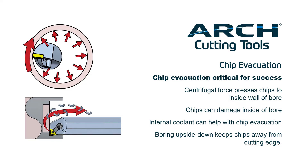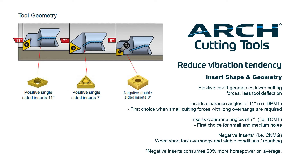A positive style insert such as a DPMT style, combined with a more positive macro geometry, will help generate some of the lowest cutting forces. When our application allows, we want to choose the most positive geometry with a chip breaker suitable for the required cutting data. In some boring applications, you may have to consider a slight compromise on wear resistance and cutting edge strength in order to avoid vibrations or improper chip control.